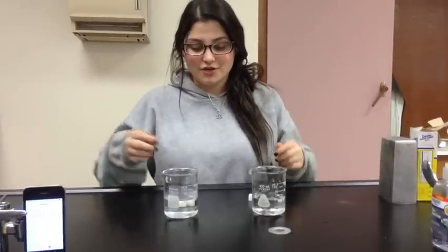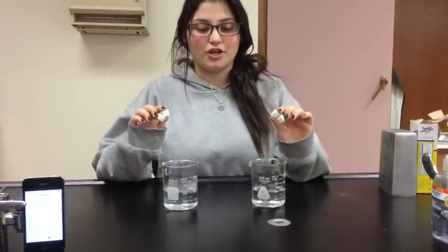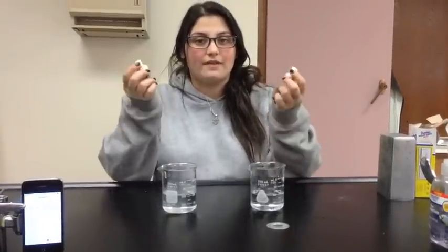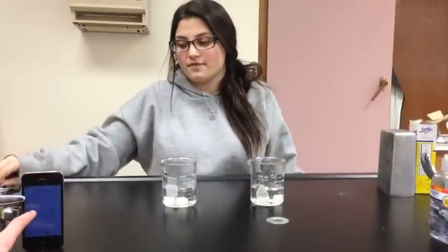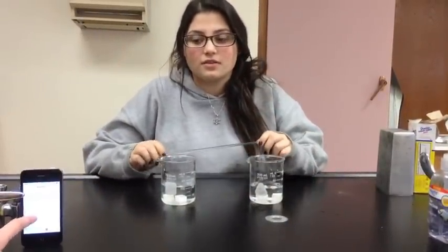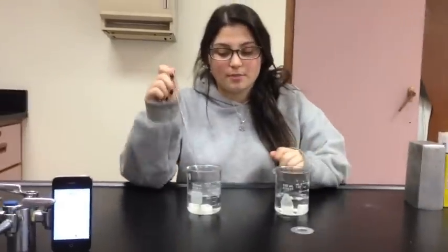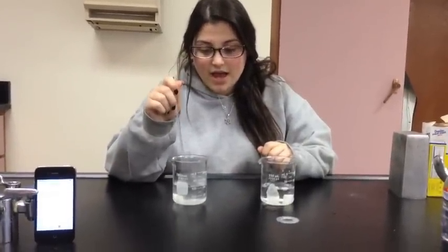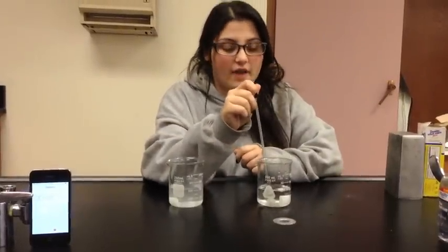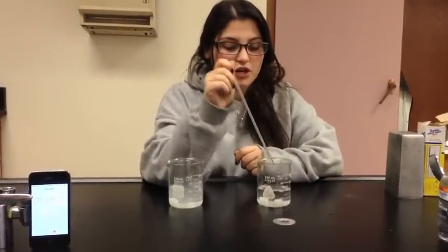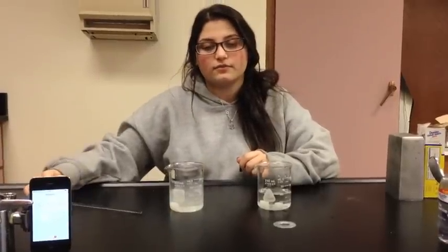Okay, so now this is our experiment. I have hot water on my left and cold water on my right. Now I'm going to drop two sugar cubes in each beaker of water. I'm going to stir both evenly and start the timer. As you can see, the difference in temperature will change the effects of the dissolving for the sugar cubes in each beaker. Now we're going to go to a close-up of the beakers.